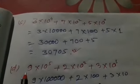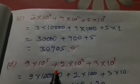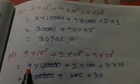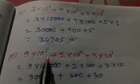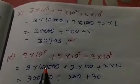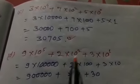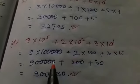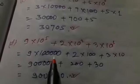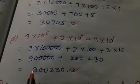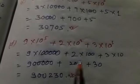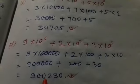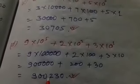Next is 9 × 10 to the power 5 plus 2 × 10 squared plus 3 × 10 to the power 1. We solve it: 9 × 10 to the power 5 means one lakh, so nine lakhs. Plus 2 × 10 squared equals two hundred. Plus 3 × 10 equals thirty. Finally, the sum of these numbers is nine lakhs, two hundred and thirty — that is 9,00,230.